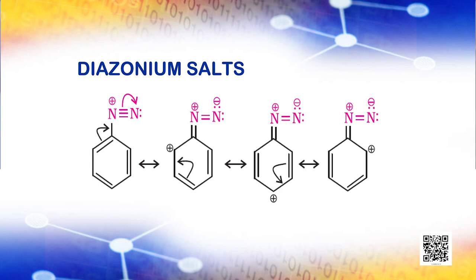Diazonium salts are one of the most reactive derivatives of aromatic primary amines but are quite unstable in nature. Primary aliphatic amines form highly unstable alkyl diazonium salts. Primary aromatic amines form arene diazonium salts which are stable for a short time in solution at low temperatures of 273 to 278 Kelvin. The stability of arene diazonium ion is explained on the basis of resonance.